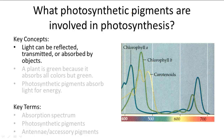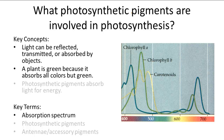We can apply this to plants. Plants are green because they absorb all the colors but green, and they do this because there are certain pigments found in plants that have specific absorption spectrums that allow them to absorb all colors but green.